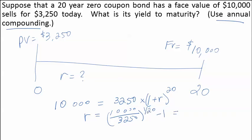This gives us 5.78%. Because of annual compounding, that is the yield to maturity. It is already an APR.